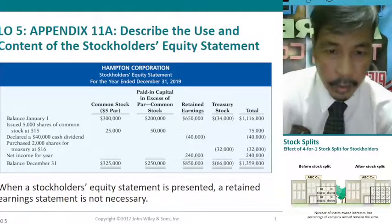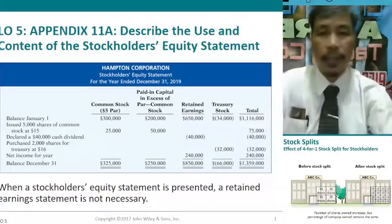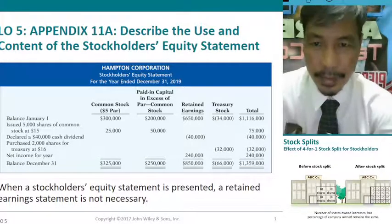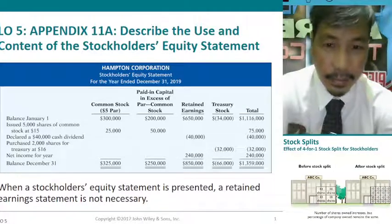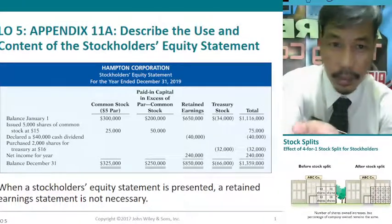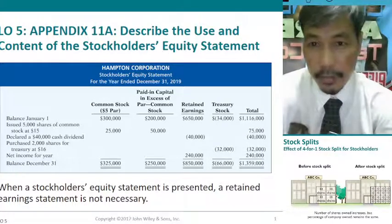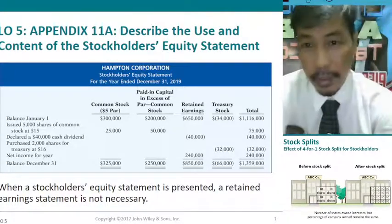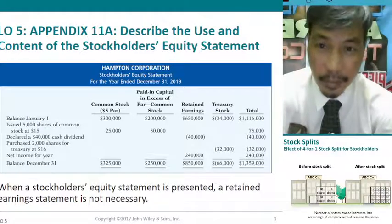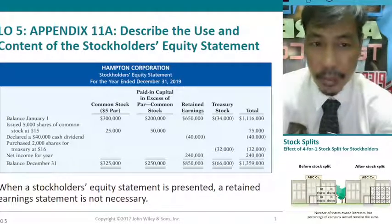When a stockholders' equity statement is presented, a separate retained earnings statement is not necessary — it is either one or the other. If you already have a stockholders' equity statement, there is no need for a standalone retained earnings statement because it is already included within it. The retained earnings statement is only a part of the stockholders' equity statement, even though it is one of the four financial statements.